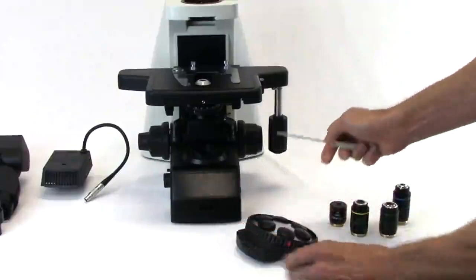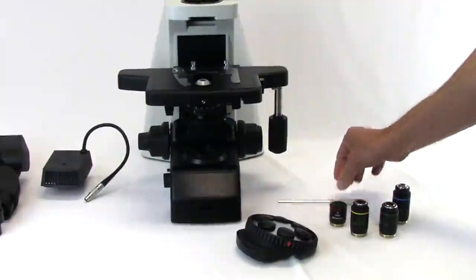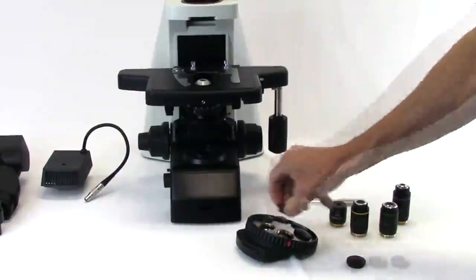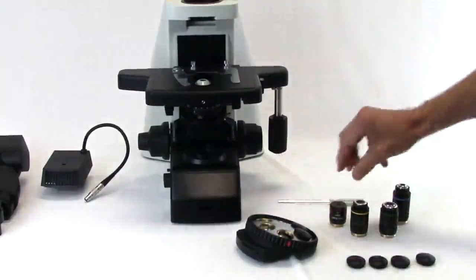Beginning with the dust plug at the position indicated by a red dot, work clockwise and unscrew enough dust plugs for the number of objectives you will be installing.